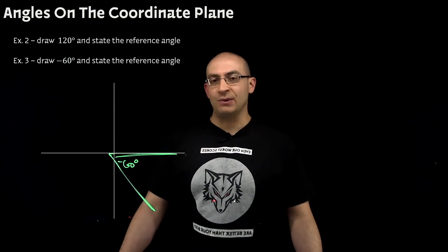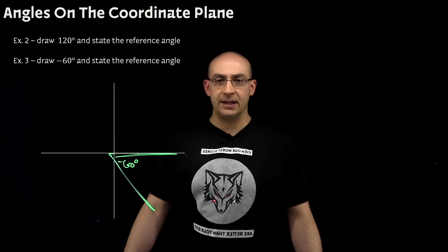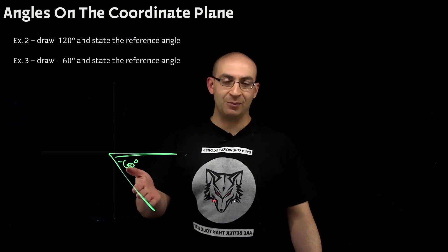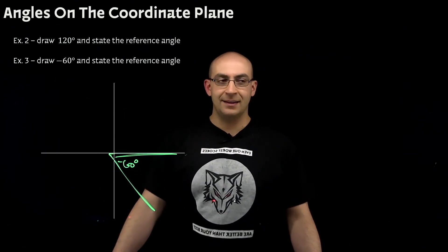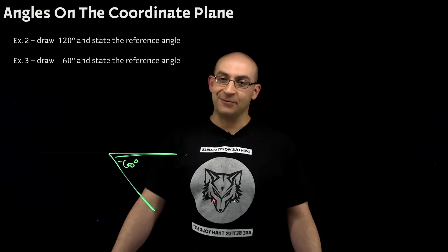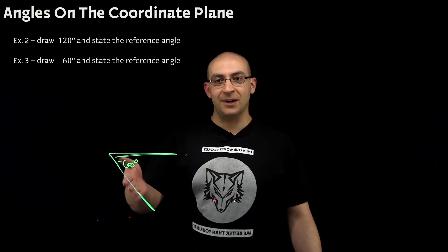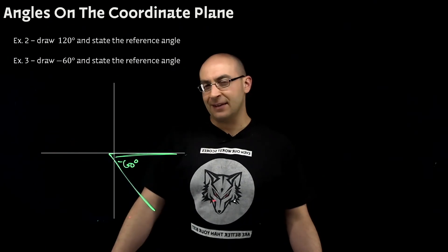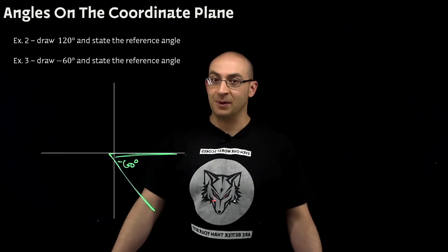Draw a negative 60 and state its reference angle. Well, negative 60 is an acute angle. It's just negative on the other side. So, some of you were thinking, oh, I just need to find the difference between its terminal point and the x-axis. Well, you're half right and you're half wrong.